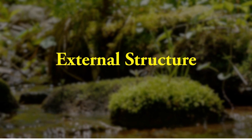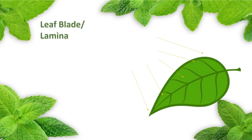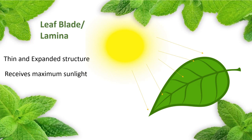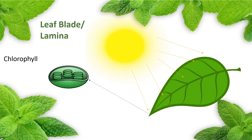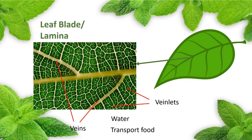A typical leaf mainly consists of these parts. 1. Leaf blade or lamina — the flat green part of the leaf is called the leaf blade or lamina. It is generally a thin and expanded structure which receives the maximum sunlight. It contains a green pigment, chlorophyll, which is essential for photosynthesis. The leaf blade has a network of veins which are further divided into fine veins called veinlets. Veins supply water to the leaf and transport prepared food from the leaf to other parts of the plant.